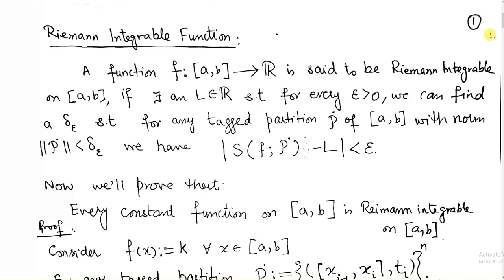First, let us revise the definition. A function f is said to be Riemann integrable on the closed interval [a, b] if there exists a real number L such that for every epsilon greater than 0, we can find a delta(epsilon) such that for any tagged partition p-dot of the closed interval [a, b] whose norm is less than delta(epsilon), the difference of the Riemann sums and L is less than epsilon.